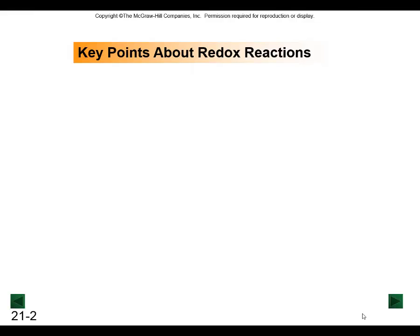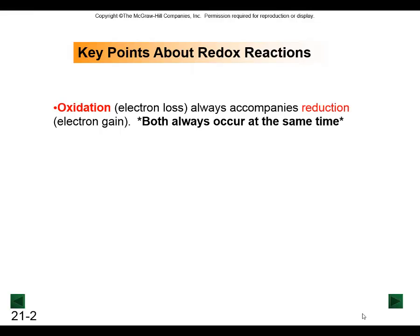The first thing you need to understand are some basic definitions about what a redox reaction is. A redox reaction occurs when both oxidation and reduction occur. If oxidation is occurring, we can define oxidation as the loss of electrons.